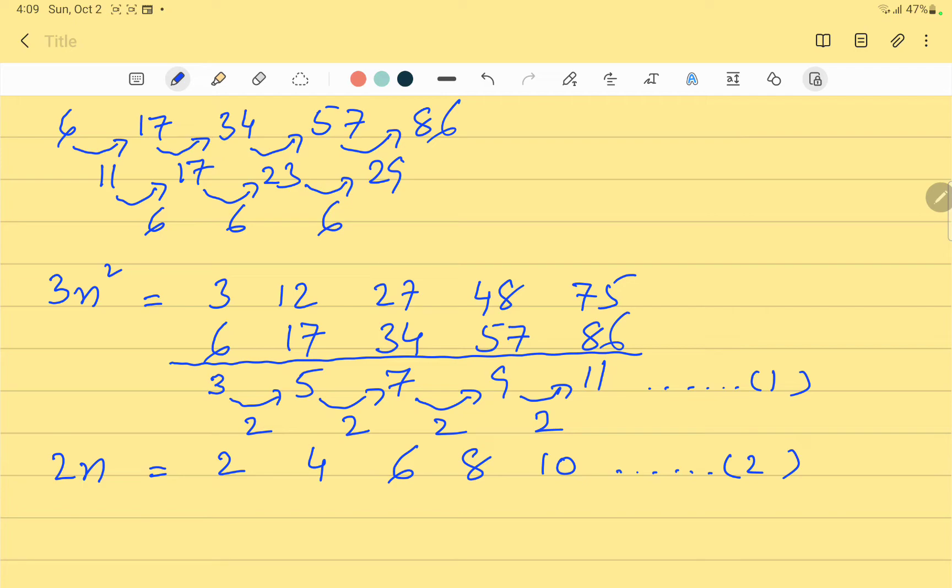Now we add Series 1 and 2, then subtract this total from the original series. The sum of the series is: 3 plus 2 equals 5, 12 plus 4 equals 16, 27 plus 6 equals 33, 48 plus 8 equals 56, and 75 plus 10 equals 85.